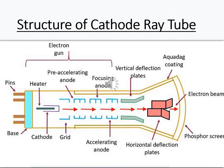Now let me give you a brief idea about the internal structure of a cathode ray tube. The cathode ray tube as a whole is divided into four main parts: the electron gun assembly, the deflection plates assembly, the phosphor screen, and the evacuated glass envelope with an aqua-dag coating.